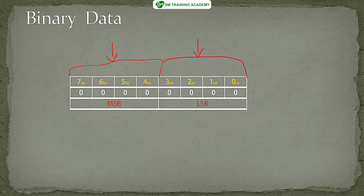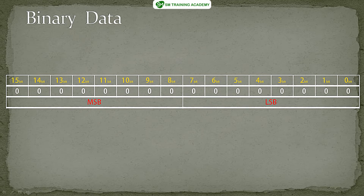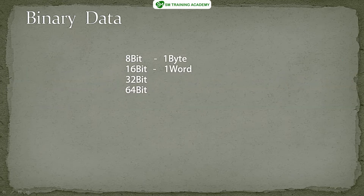For an 8-bit binary number, bits go from zero to seven. For 16-bit, from zero to fifteen. For 32-bit, from zero to thirty-one. For 64-bit, from zero to sixty-three. Also, 8 bits of binary data is called a byte, and 16 bits is called a word of data.